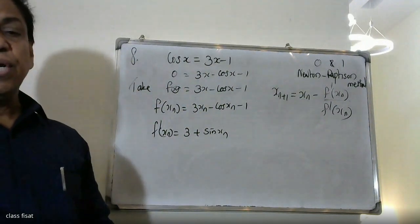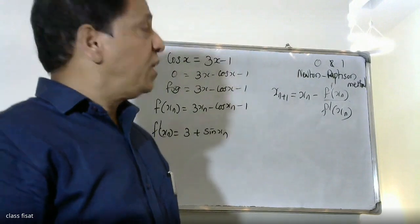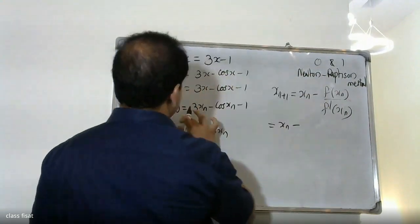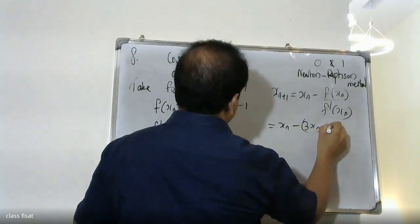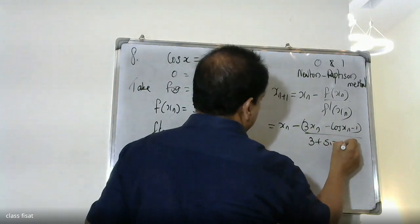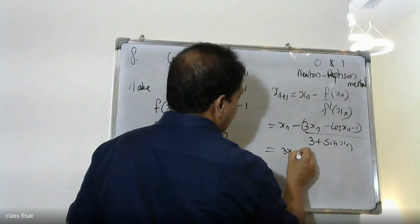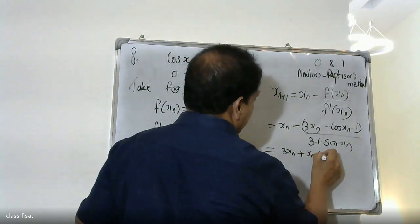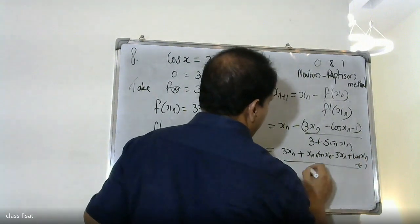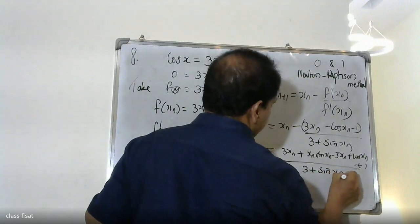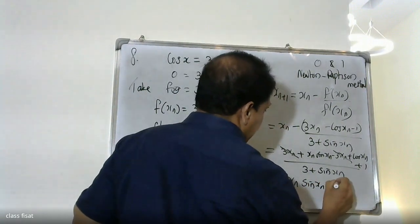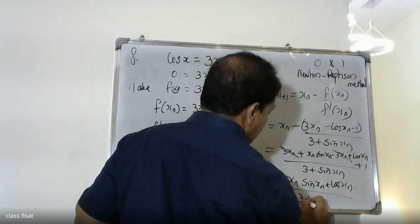Substituting: f of x n equals 3x n minus cos x n minus 1, and f dash x n equals 3 plus sin x n. After simplification, the iteration formula becomes: x n plus 1 equals x n sin x n plus cos x n plus 1, divided by 3 plus sin x n.